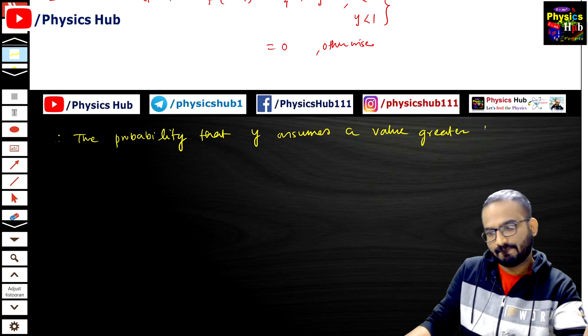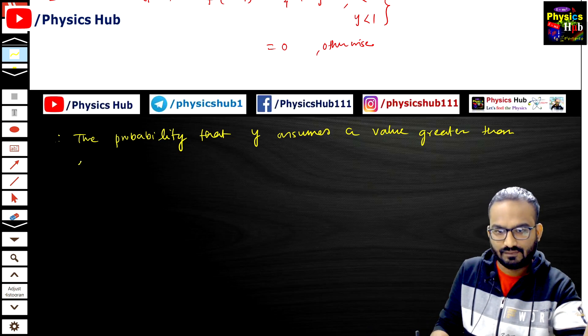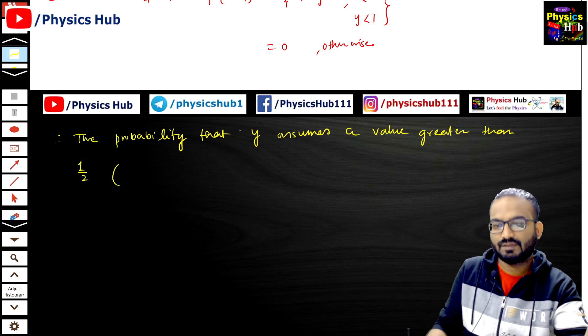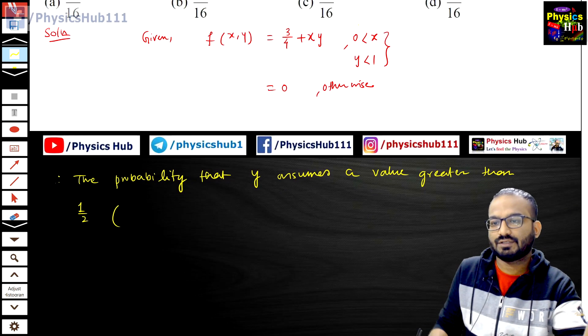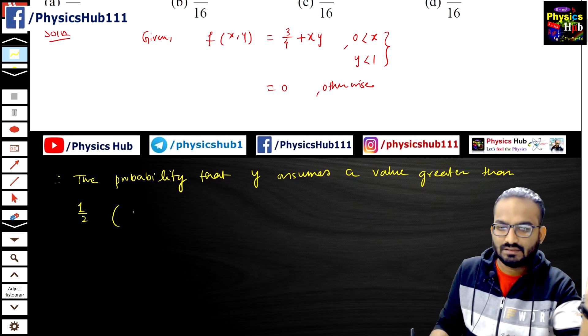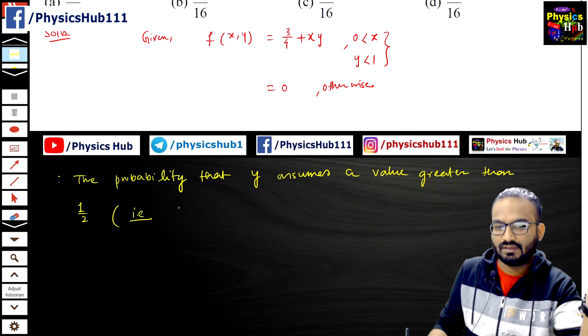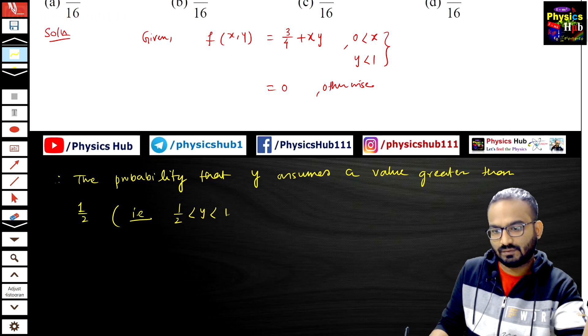a value greater than 1/2. What does it mean? For the given condition y less than 1 and having a value greater than 1/2, so 1/2 less than y less than 1.